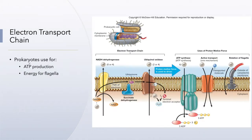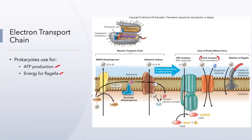The electron transport chain is a little different in prokaryotic organisms than in eukaryotic organisms, so we'll look at prokaryotes first since that's what we study in microbiology. For prokaryotes, the electron transport chain is used for ATP production, and it's also used as an energy source to drive flagella. A final use is active transport — protons are used to power the transportation of a molecule back across the membrane.